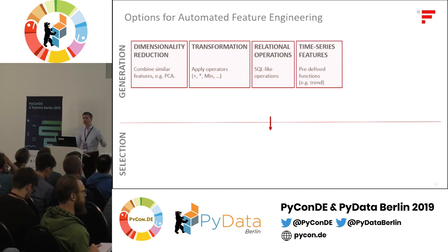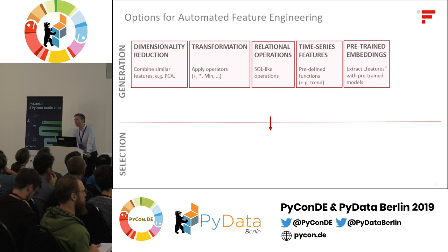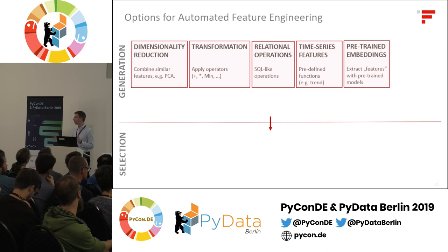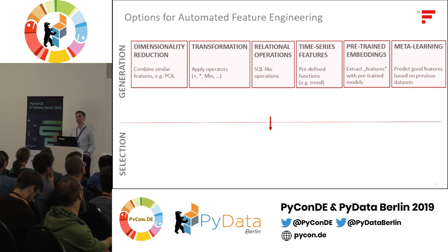Time series features: if your time series has a trend, you might want to create a feature from that. Pre-trained embeddings are more complex — this means using a pre-trained domain-specific model to tell you more about the data; for example, if you have text, you can use another model to encode the meaning as a vector to use as a feature, similar to transfer learning. Meta-learning is a harder topic: learning what might be good features for a new dataset by learning over many datasets, predicting which features work in general for a given type of data.